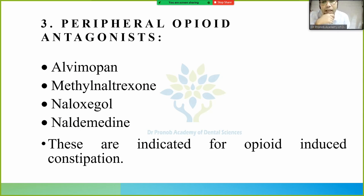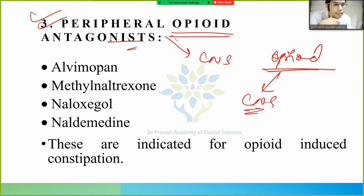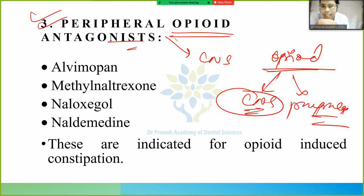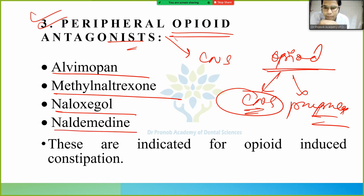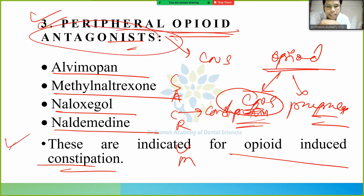There are also peripheral opioid antagonists — peripheral because we don't want central nervous system effects. Opioids work centrally too, but as laxatives we want only peripheral action. This class includes methylnaltrexone, naloxegol, and naldemedine. These are indicated for opioid-induced constipation — since constipation is a known side effect of opioids (from the SECRAM mnemonic, C = constipation).